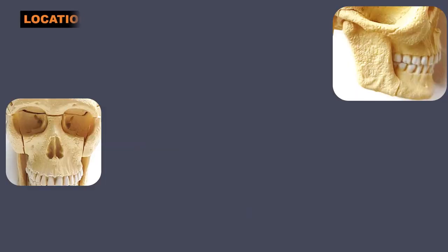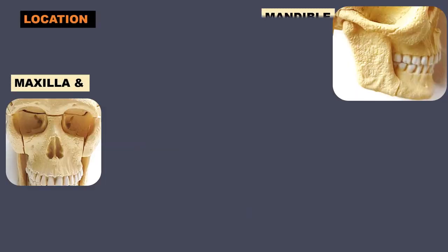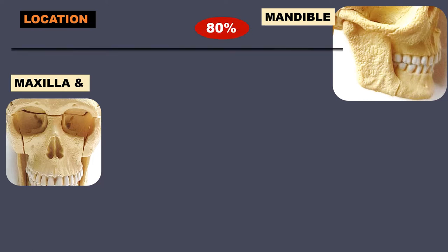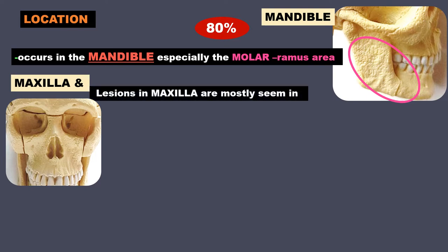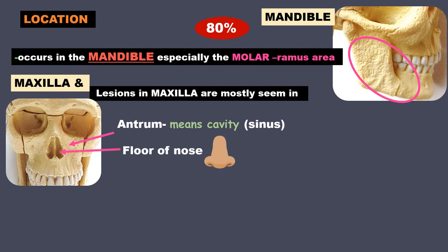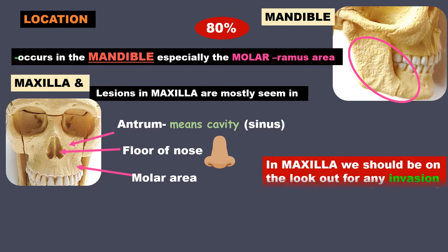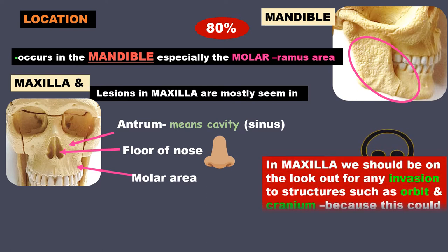Looking at the location, it is seen in both the maxilla and the mandible. 80% occurs in the mandible, especially the molar-ramus area. Lesions in the maxilla are mostly seen in the antrum (the sinus cavity), floor of the nose, and molar area. In the maxilla, we should be on the lookout for any invasion to nearby structures like the orbit and the cranium, because this could prove to be fatal.